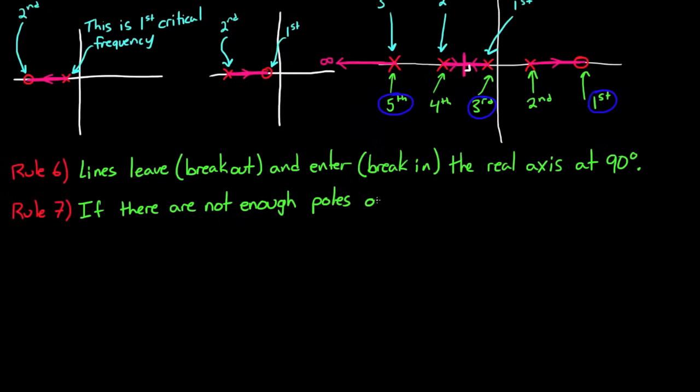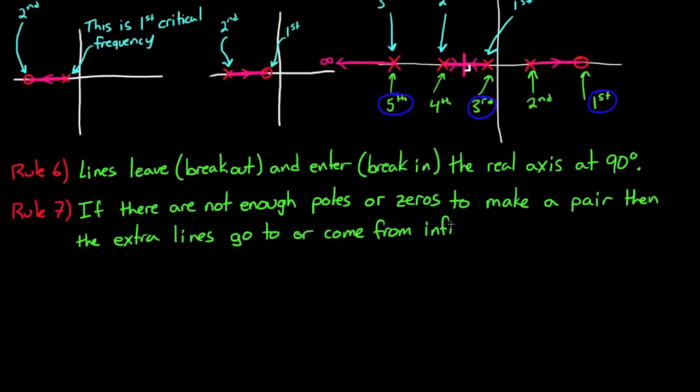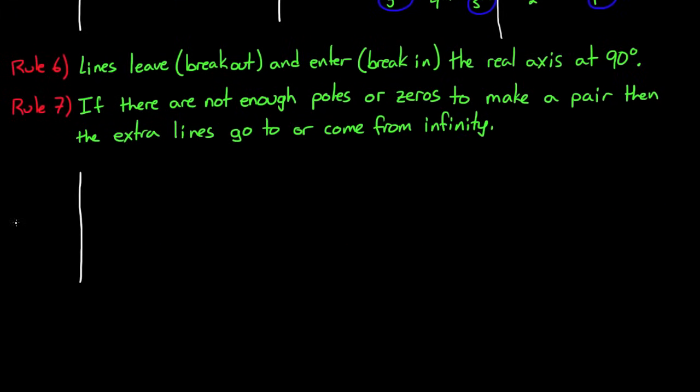So roots leave the real line in search of an open loop zero. And they break into the real line from an open loop pole. So rule seven states, what happens if there aren't enough poles or zeros to make a pair? Then it states that the unmatched poles go off to infinity to find a zero, and the unmatched zeros, the lines come in from infinity. So for example, if you have a system with just one pole and no zeros, then you have one extra pole. And the line goes to the left of that pole, if it's on the real line here, off to infinity to search for its open loop zero.